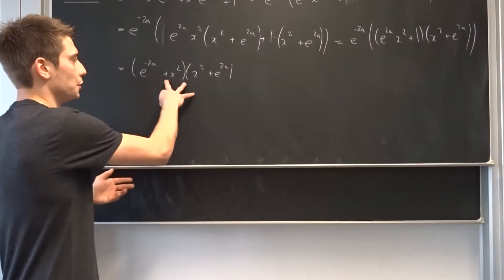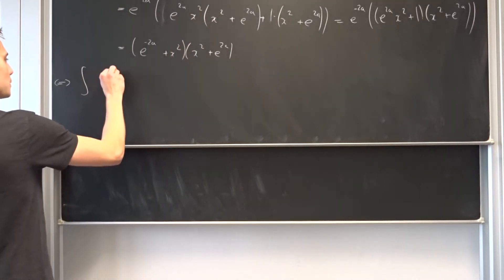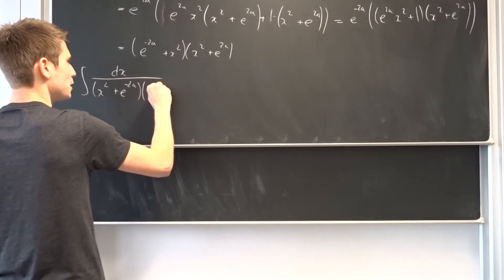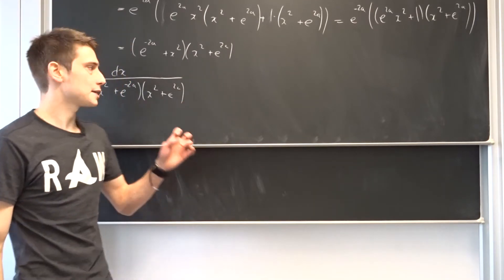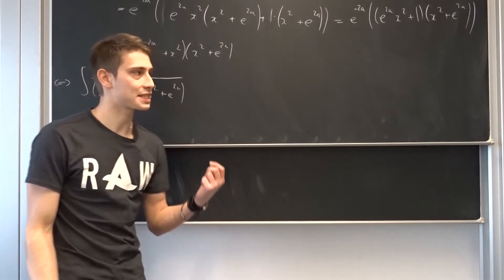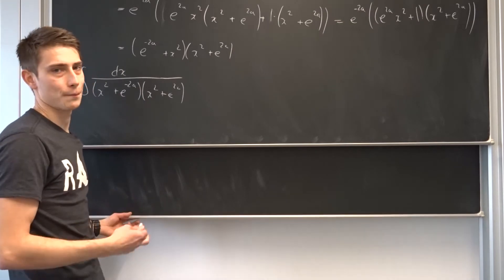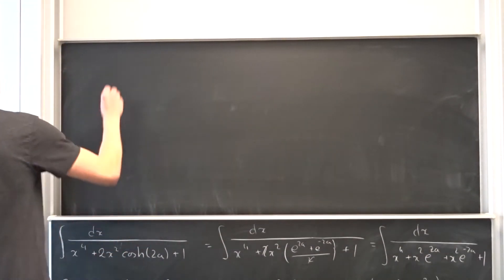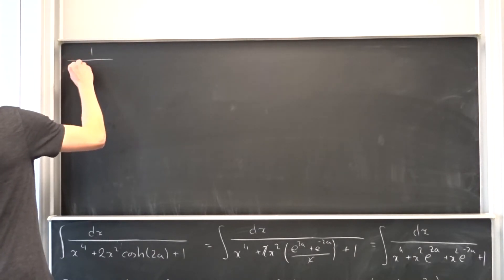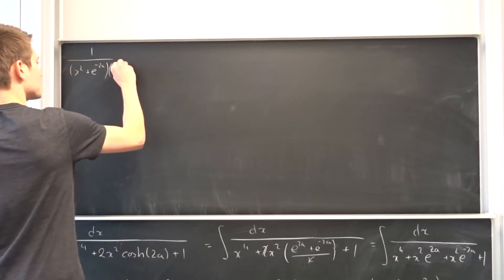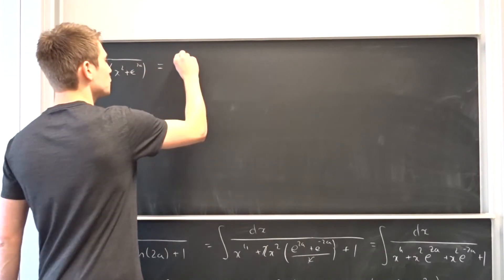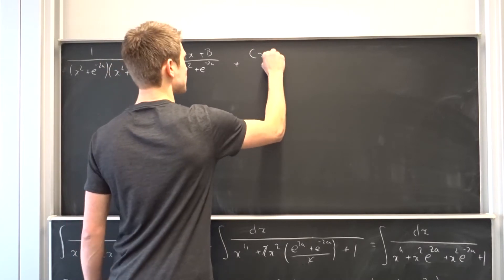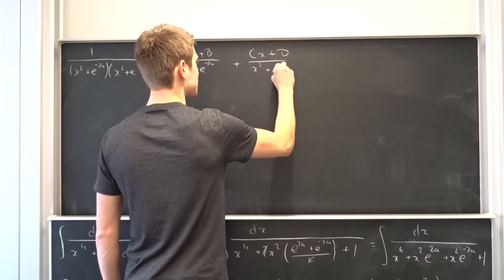Now we can plug our new denominator into the integral. So the integral is equal to the integral of dx over x squared plus e to the minus 2a times x squared plus e to the 2a. This denominator still looks not so nice, so we are going to use some partial fractions. Let's transform them: we take 1 over (x squared plus e to the minus 2a)(x squared plus e to the 2a), and set it equal to (Ax + b) over x squared plus e to the minus 2a plus (Cx + d) over x squared plus e to the 2a.